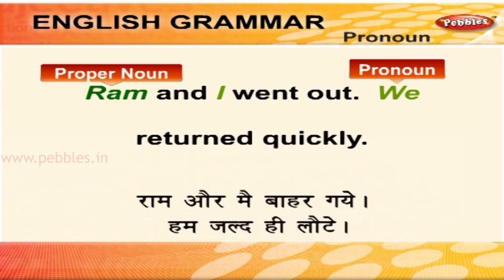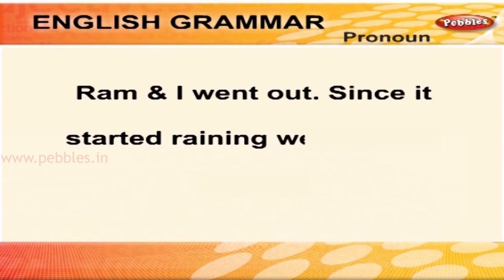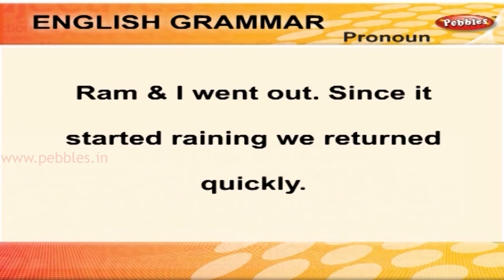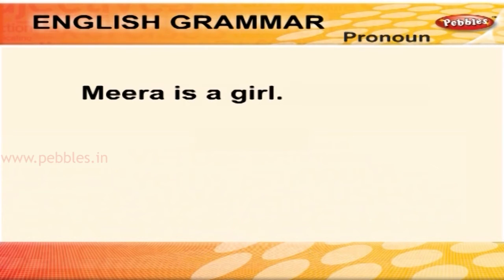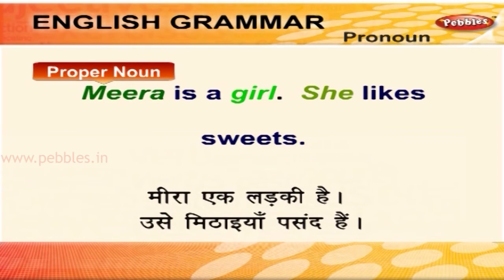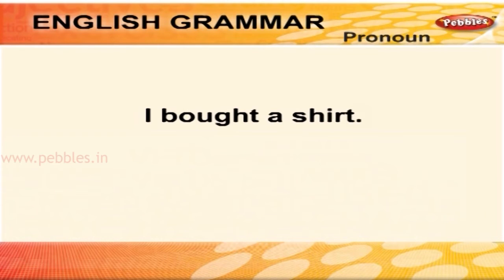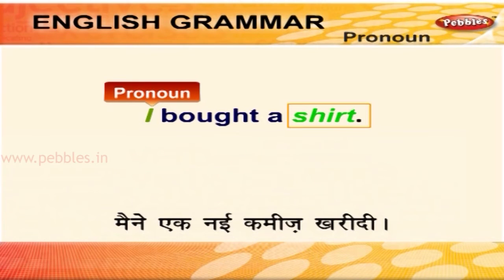इस वाक्य को कुछ बदल कर देखते हैं। Ram and I went out. Since it started raining, we returned quickly. राम और मैं बाहर गए, बारिश के कारण हम जल्द ही लोटे। यहाँ आई, इट और वी — ये तीन शब्द प्रोणाउन हैं। Meera is a girl. She likes sweets. मीरा एक लड़की है, उसे मिठाईयाँ पसंद हैं। यहाँ मीरा नामक प्रॉपर नाउन की जगह शी नामक प्रोणाउन ने ले ली है। I bought a shirt — आई एक प्रोणाउन है और शर्ट एक कॉमन नाउन है।